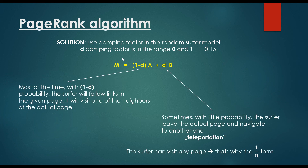Let's take a concrete look at this equation. We have two terms. The first is (1 minus D) times A. What does it mean? It means that most of the time — with (1 minus D) probability — since D is very small, 1 minus D is quite large. So in this case, with 85% probability, the surfer on the web will follow links on the given page.